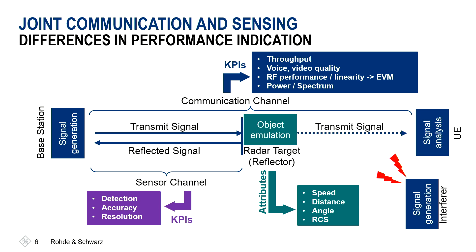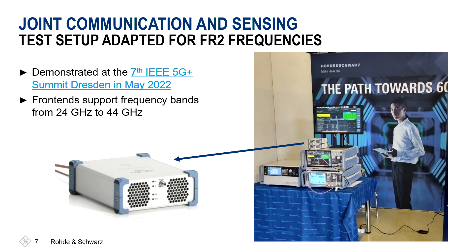We have instruments that can emulate things, like a signal generator doing base station signals, a signal analyzer receiving and analyzing transmitted signals, and a signal generator can also produce interfering signals. We also have an object emulator able to emulate certain targets. On this slide you can see how we demonstrated this at a real conference in Dresden in May earlier this year. We used the RREC to influence the signals generated by the generator and performed autocorrelation measurements with the analyzer. Importantly, radar test instrumentation is not designed for FR2 communication frequency bands today, so we used an FV44 front-end from the communication world together with the RREC as a prototype solution to support active research.